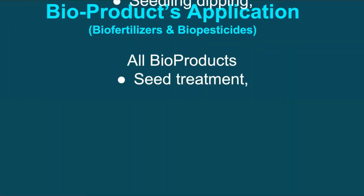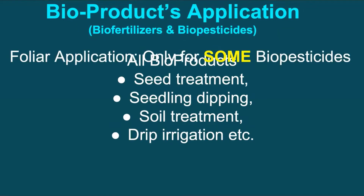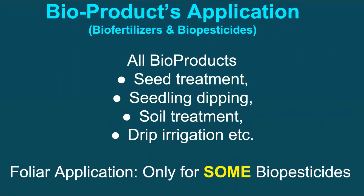The various methods for applying bioproducts are seed treatment, seedling root dipping, soil treatment, and drip irrigation. It is important to mention that not all bioproducts can be applied through all methods — it depends upon the type of bioproduct and the crop to be treated. Our purpose here is to discuss the steps and practices to follow against each method whenever suggested.